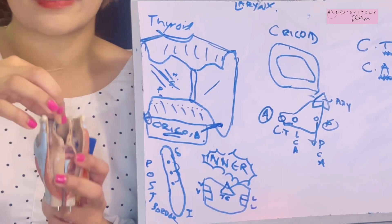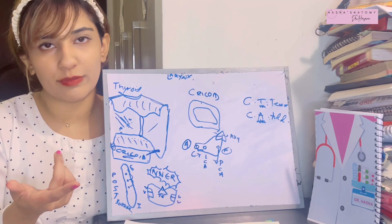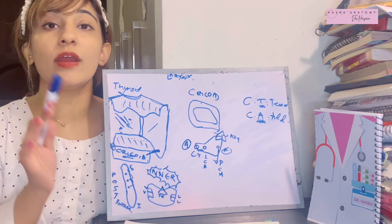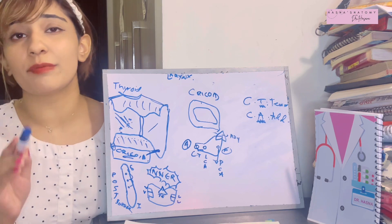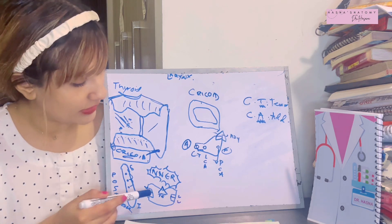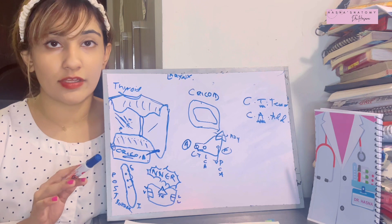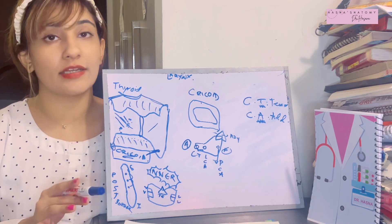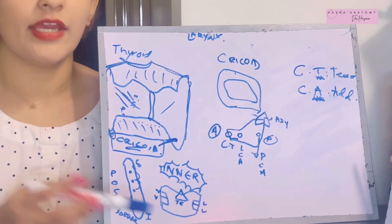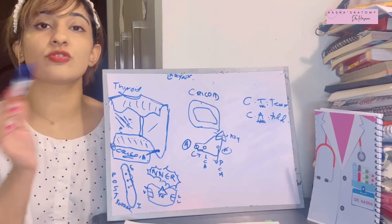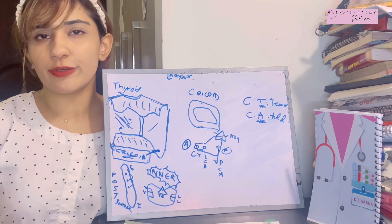On the inner aspect of the thyroid cartilage, the epiglottic cartilage is present. The thyroepiglottic ligament and thyroepiglottic muscle connect the thyroid to the epiglottis. Additionally, on each side of the inner aspect of the thyroid cartilage, there is the vestibular fold and the vocal fold — the vestibular fold lying above and the vocal fold lying below.